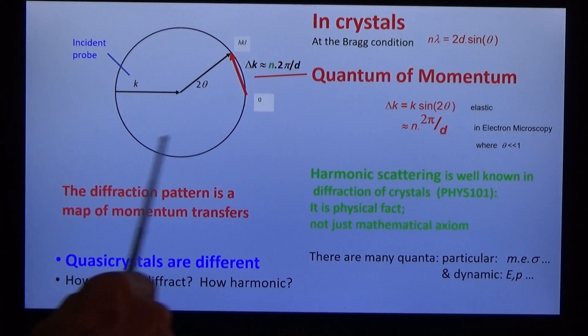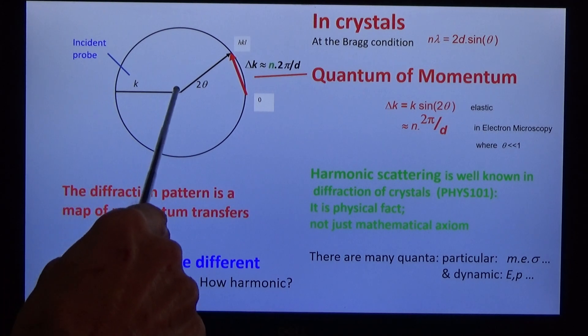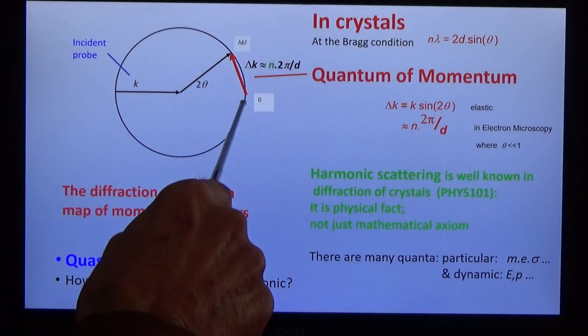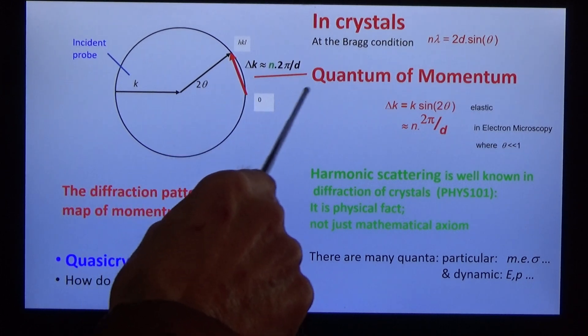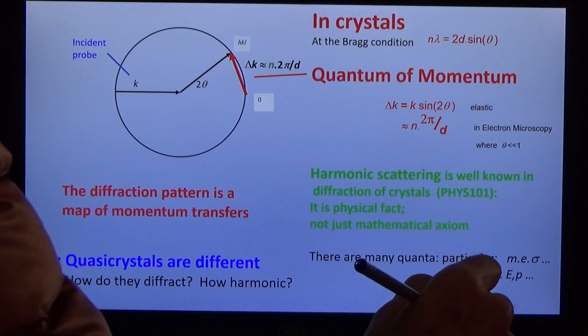The diffraction pattern is a map of momentum transfers. Consider the incident beam k. It scatters elastically and the quanta of momentum are given by Bragg's law. That's crystalline scattering.